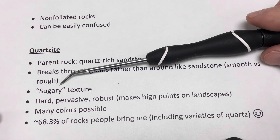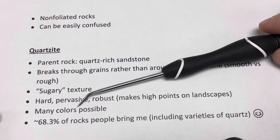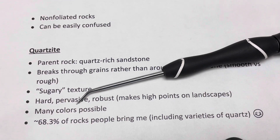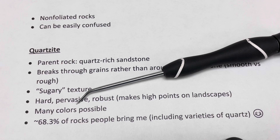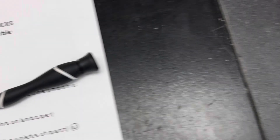Quartzite comes in a variety of colors — I've seen quartzites in almost any color in the rainbow. A lot of rocks tend to be more drab colors, but reds, greens, and all sorts of colors are possible. Let's go ahead and look at a few samples.